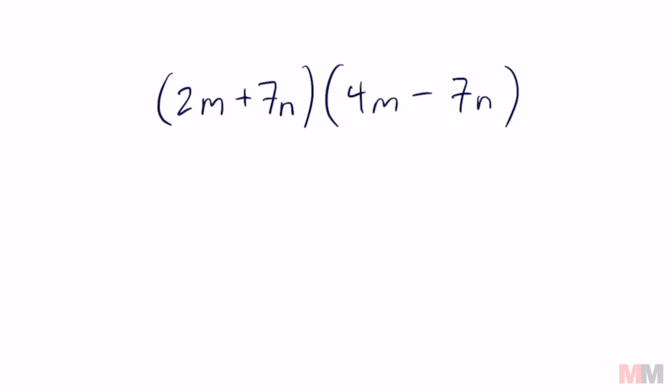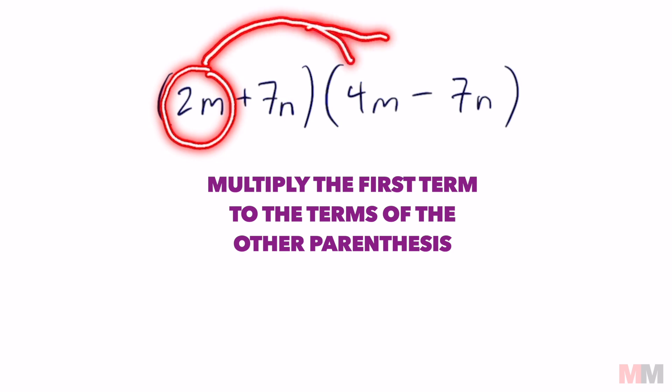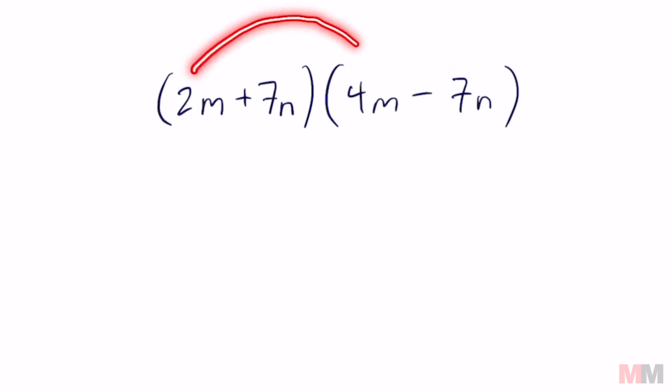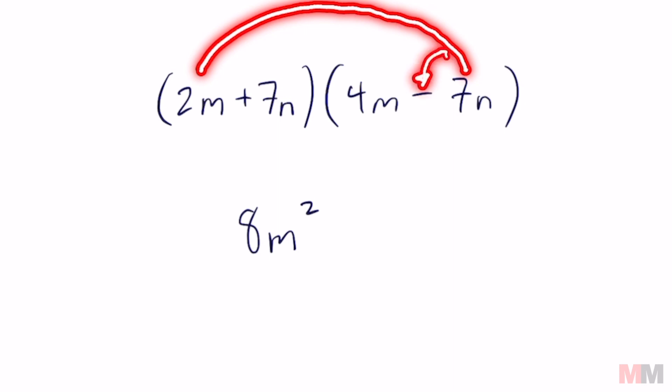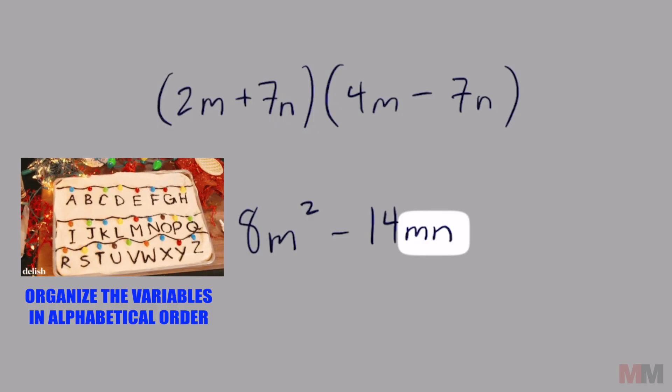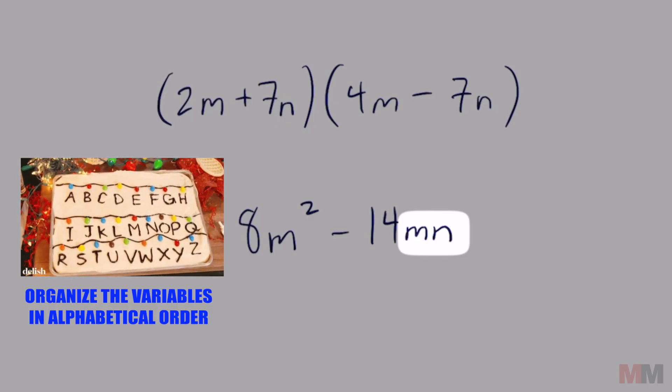The most traditional way is just distributing. To distribute this out you're going to look at your very first term and multiply that to the other terms in the other parentheses. First we're going to do 2m times 4m, and don't forget that m times m is m squared. Now connect that 2m to the other term negative 7n. 2m times negative 7n is negative 14mn, and these variables, if there's multiple variables, you're going to want to put them in alphabetical order just to organize them better.